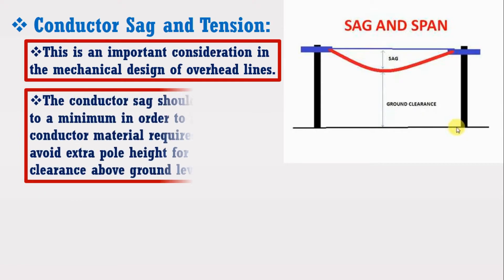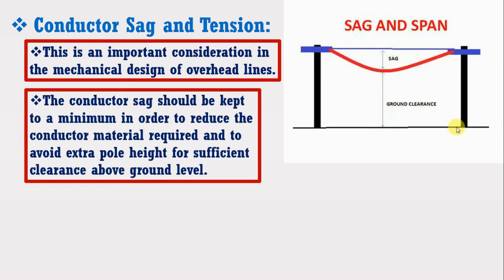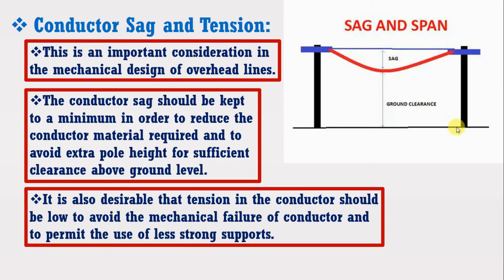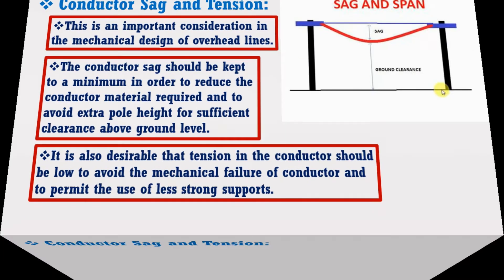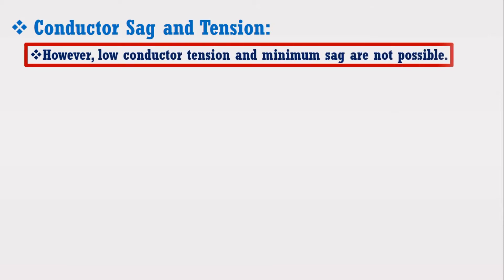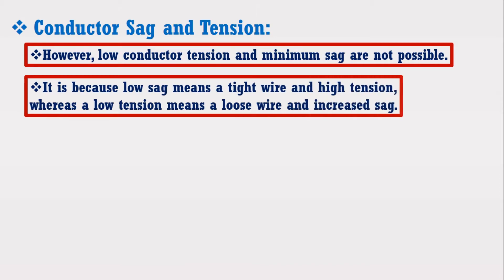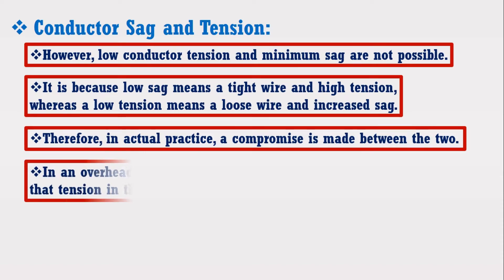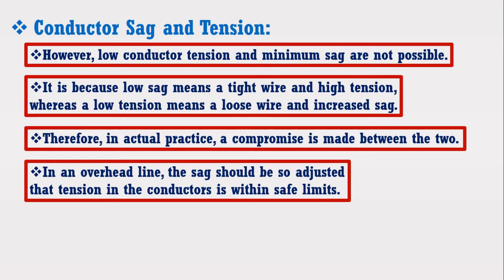The conductor sag should be kept to a minimum in order to reduce the conductor material required and to avoid extra pole height for sufficient clearance above the ground level. It is also desirable that tension in the conductor should be low to avoid mechanical failure and to permit the use of less strong supports. However, low conductor tension and minimum sag are not possible simultaneously. Low sag means a tight wire and high tension, whereas low tension means a loose wire and increased sag. Therefore, in actual practice a compromise is made between the two. In an overhead line, the sag should be so adjusted that tension in the conductor is within safe limits.